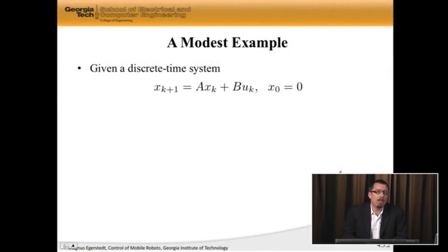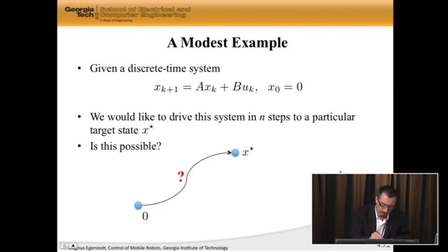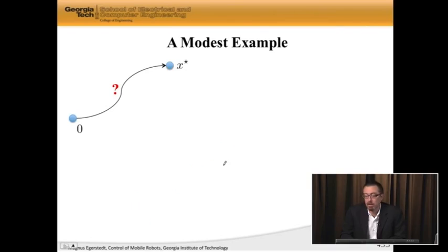And in order to sneak up on controllability, I'm going to start with a rather modest example. Let's do a discrete time system. We've seen mainly continuous time systems, but let's start with a discrete time system here, starting at time zero at the origin at zero. So what I would like to do is take this system, and in n steps, where n is the dimension of my state, I want to drive it to a target state x star. So basically, here's what I want to do. I want to start at the origin, and then in n steps, flow around until I get to where I would like to be. And the question one can ask then is, can I do that? Is it possible? Does there exist such a u?